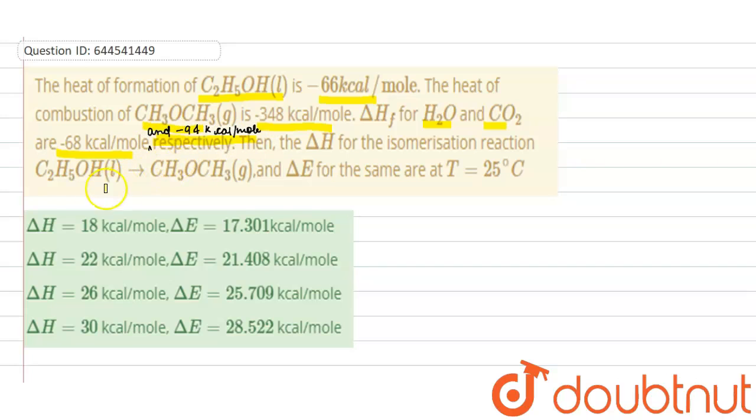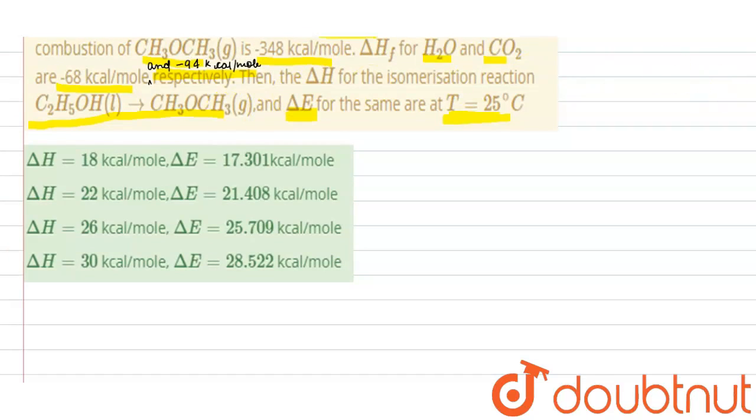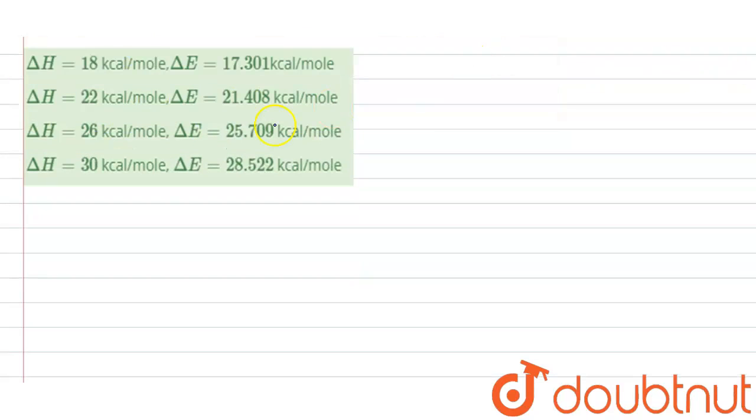We need to find delta H for isomerization reaction and delta E for the same at the temperature 25 degrees Celsius. So here your desired equation is this. But what information are given?